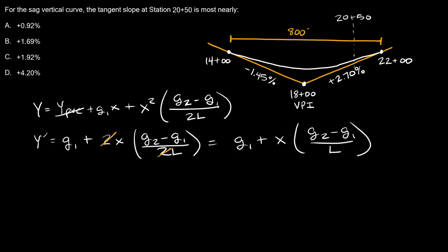So now we just have a few variables that we need to fill in. So this is going to be equal to, first of all, G1. So our first slope right here is negative 1.45 plus X. So that's the distance from the start of your curve to the point of interest, so from 1400 to 2050, that's 650 feet. 650 feet times